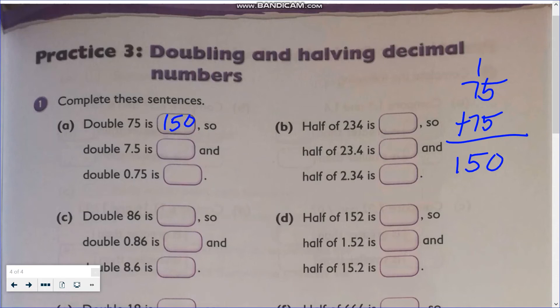You will see there is no decimal number in 75, and there is no decimal number in the answer 150. So what is the double of 7.5? Let's use the same number: write 150. There is one decimal place in 7.5, so let's put the decimal point after 5, giving 15.0. For double 0.75, there are two decimal places, so count two decimal places in 150 — the decimal point goes after 1, giving 1.50.